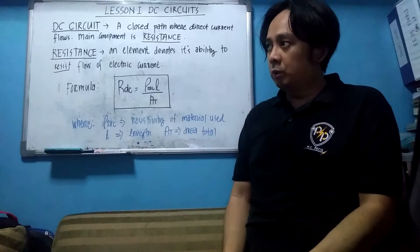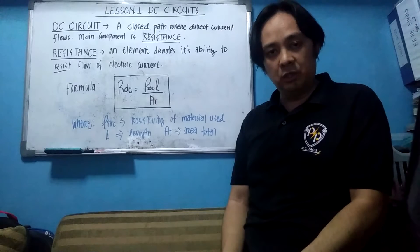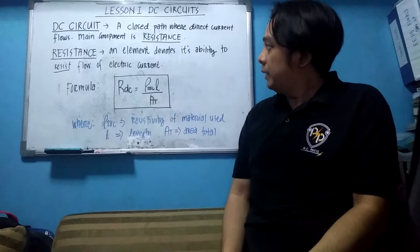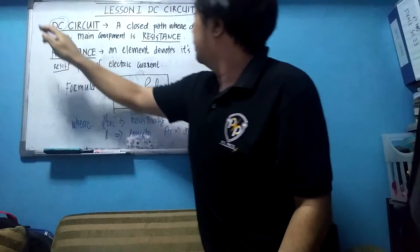First of which is we need to determine what is this circuit. So, what's the definition of that? When you say DC, means direct current. DC means direct current.